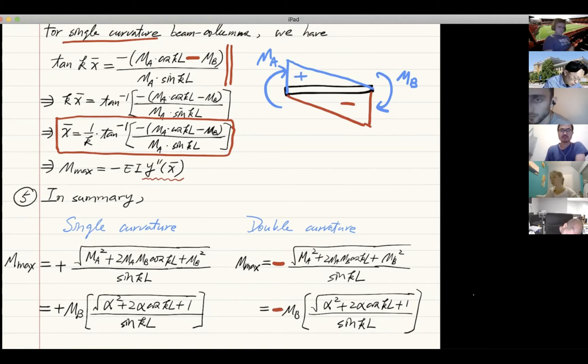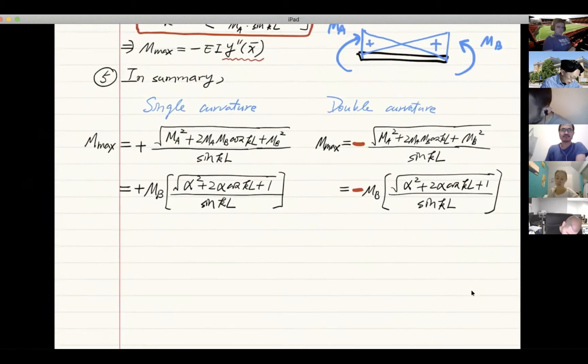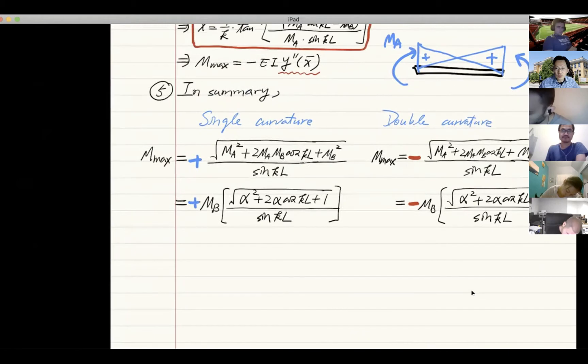If it becomes the other way around, which means MA goes this way and MB goes this way, for MA it's positive. For MB, it's also positive. So this positive sign is associated with this positive sign here, so you know that is single curvature.